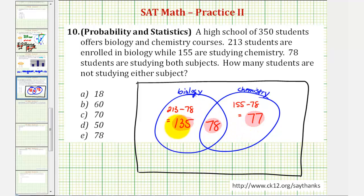To find this, we'll take the total amount of 350 students and subtract the students taking biology, chemistry, or both. So we'll subtract the quantity 135 plus 78 plus 77, which is 350 minus 290, which is equal to 60.